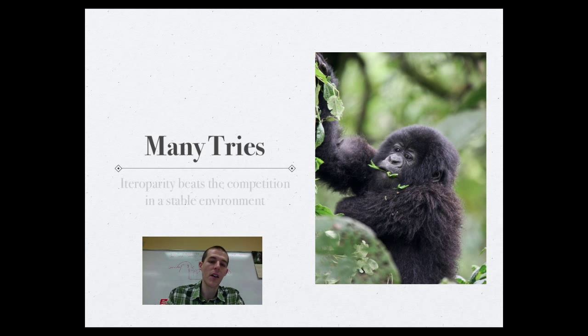In contrast to this, we have got iteroparity, which basically beats the competition in a stable environment. And this is many tries. So an example of iteroparity would be humans. We have the possibility to have babies every nine or ten months. Not that we should, but we have the potential to. But there are a lot of organisms that have a small litter of babies every season or every year or every couple of years.